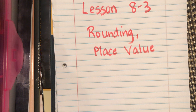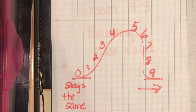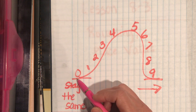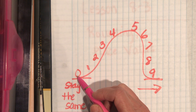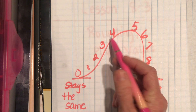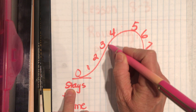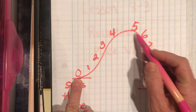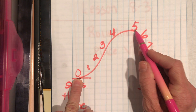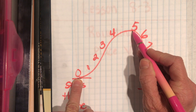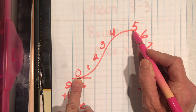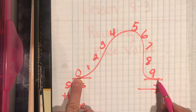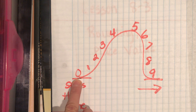When looking at rounding to the nearest 100 or the nearest 10, the roller coaster is a great way to visualize it. If the number next to it is 0, 1, 2, 3, or 4, it's going to slide back down and stay at that lower 10 or lower 100. If the number is 5, 6, 7, 8, or 9, you're already at the peak and you're going to ride the roller coaster down to the next 100.